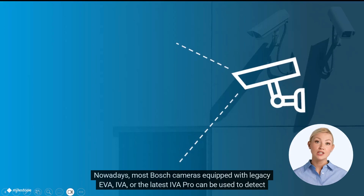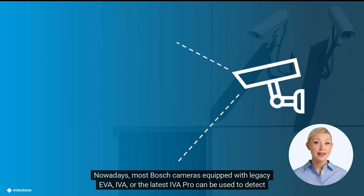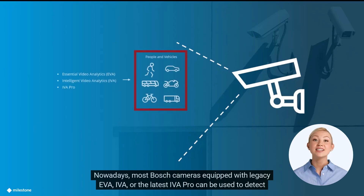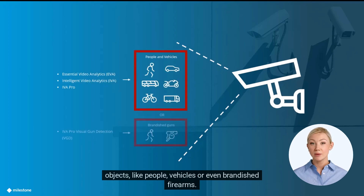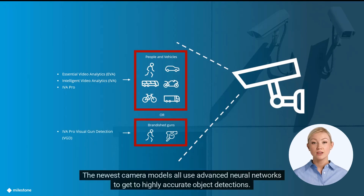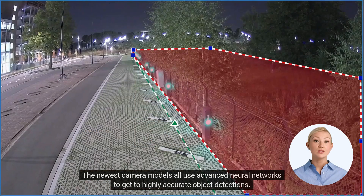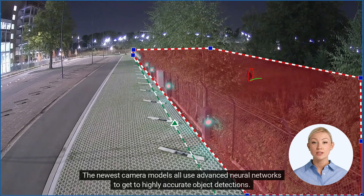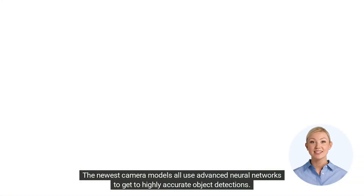Nowadays, most Bosch cameras equipped with legacy EVA, IVA, or the latest IVA Pro can be used to detect objects like people, vehicles, or even brandished firearms. The newest camera models all use advanced neural networks to get to highly accurate object detections.